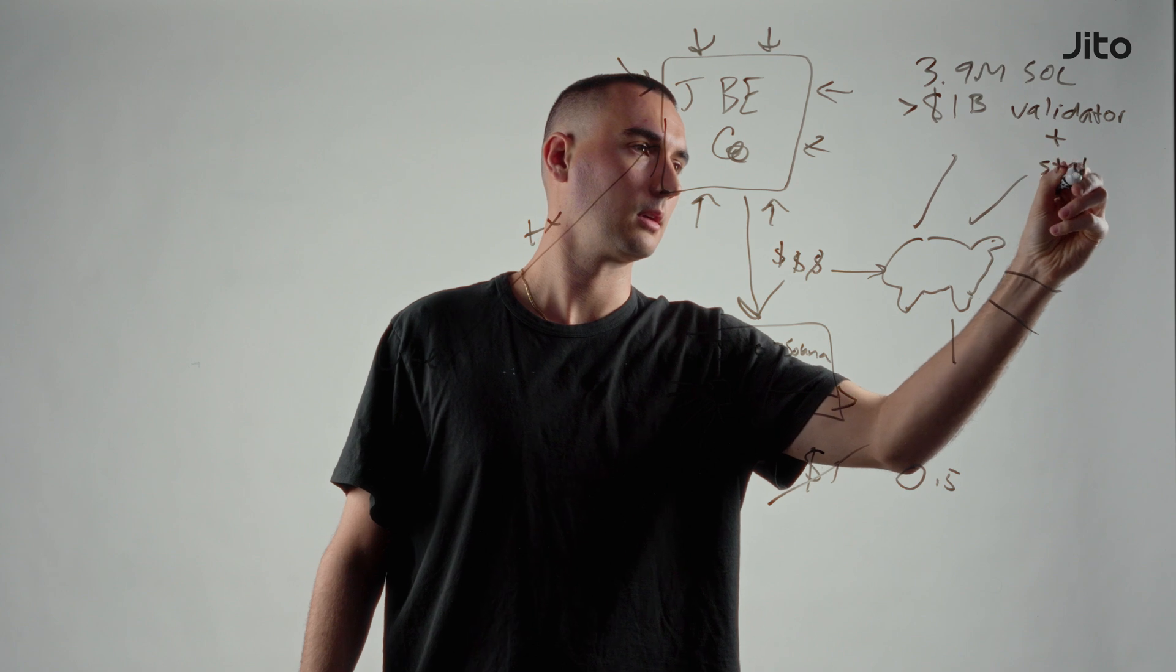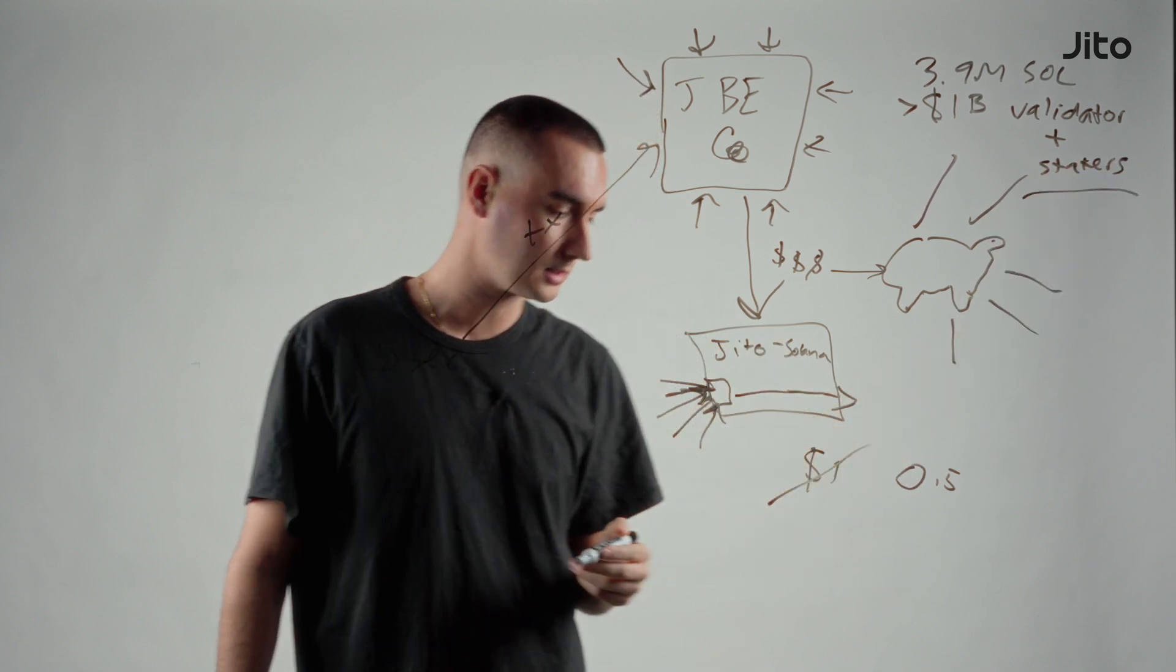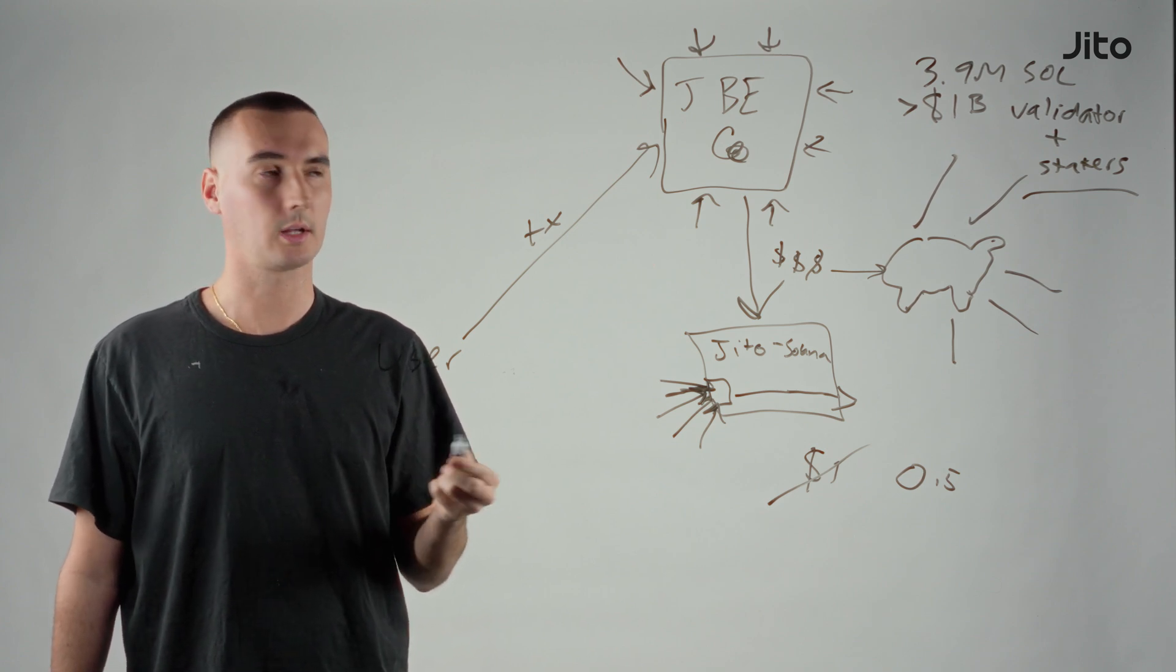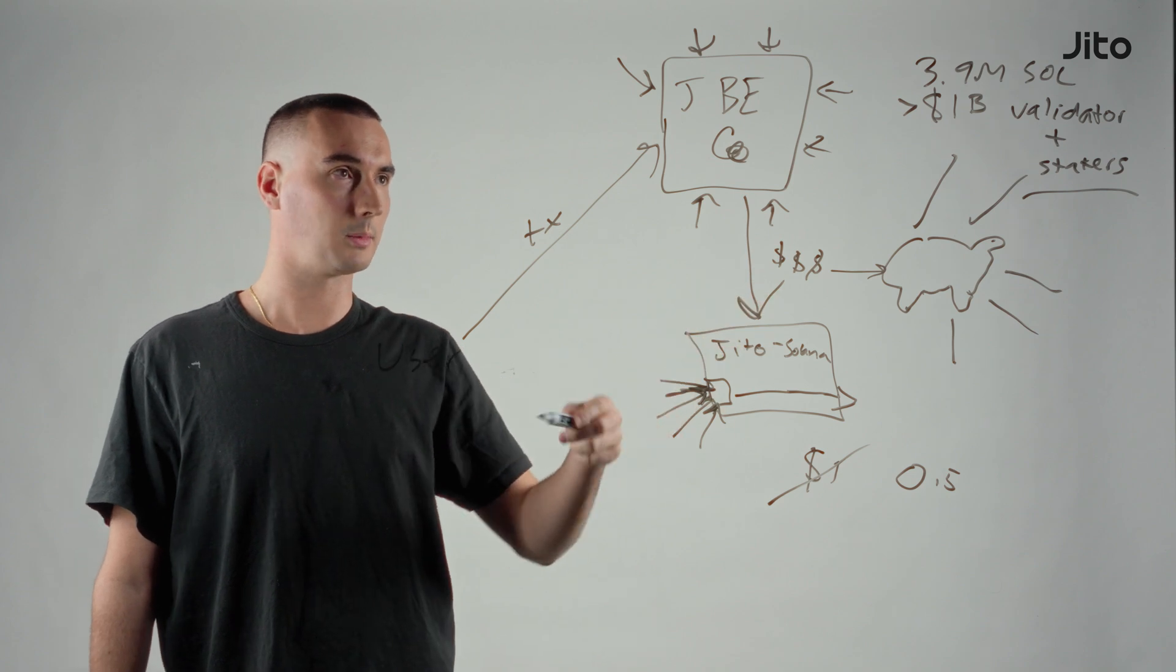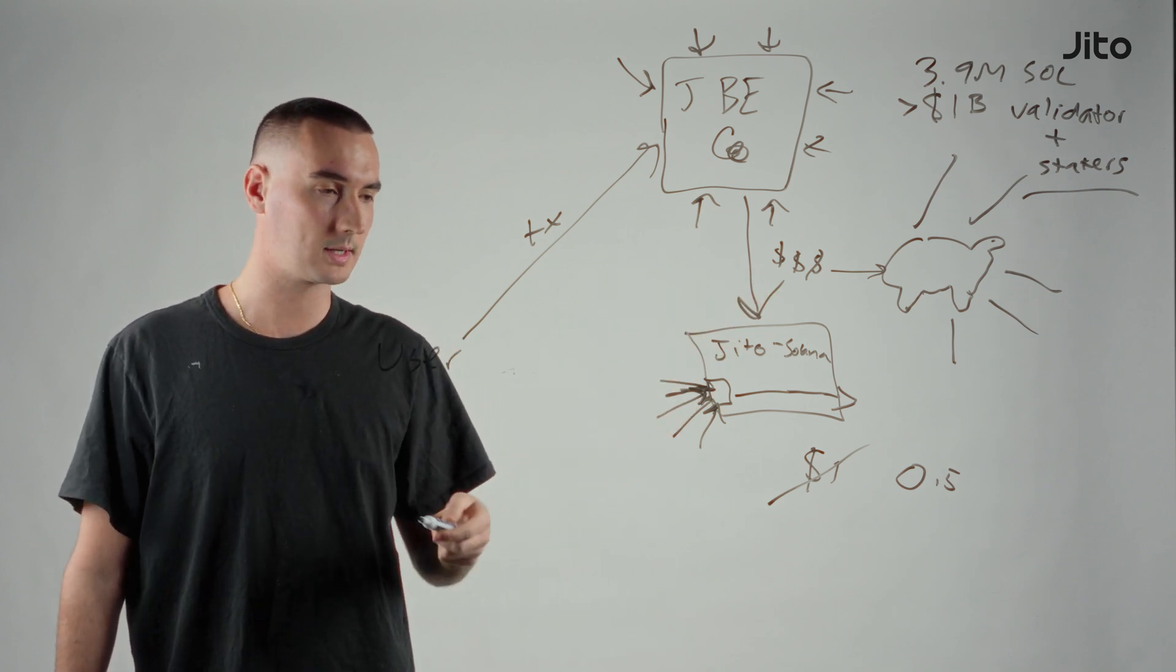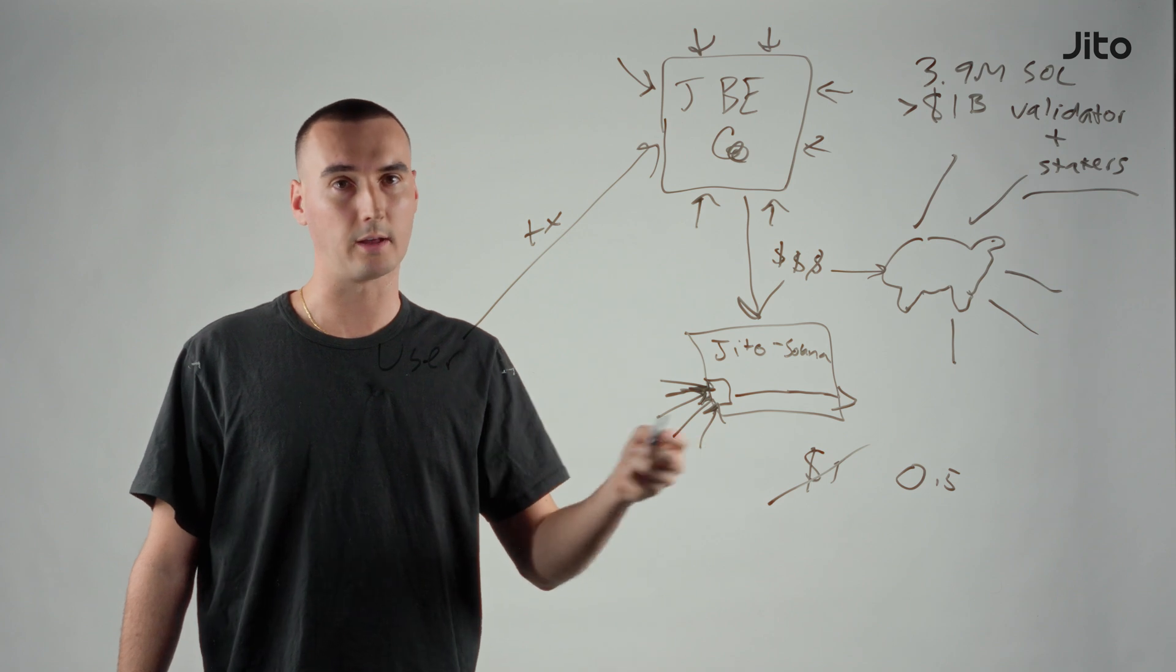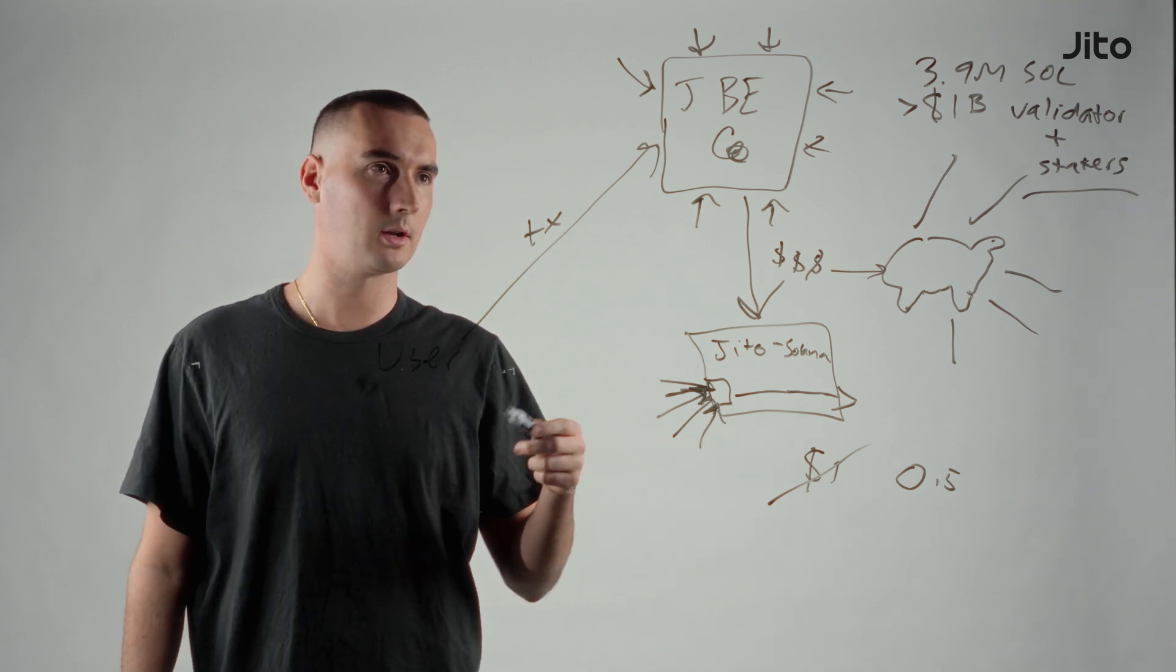And stakers - the staker part's important. We care a lot about the stakers and we want those tips. So all this system and everything is meant to reward stakers, where the priority fees, those are only kept by the validator. Stakers don't get to see any of that.